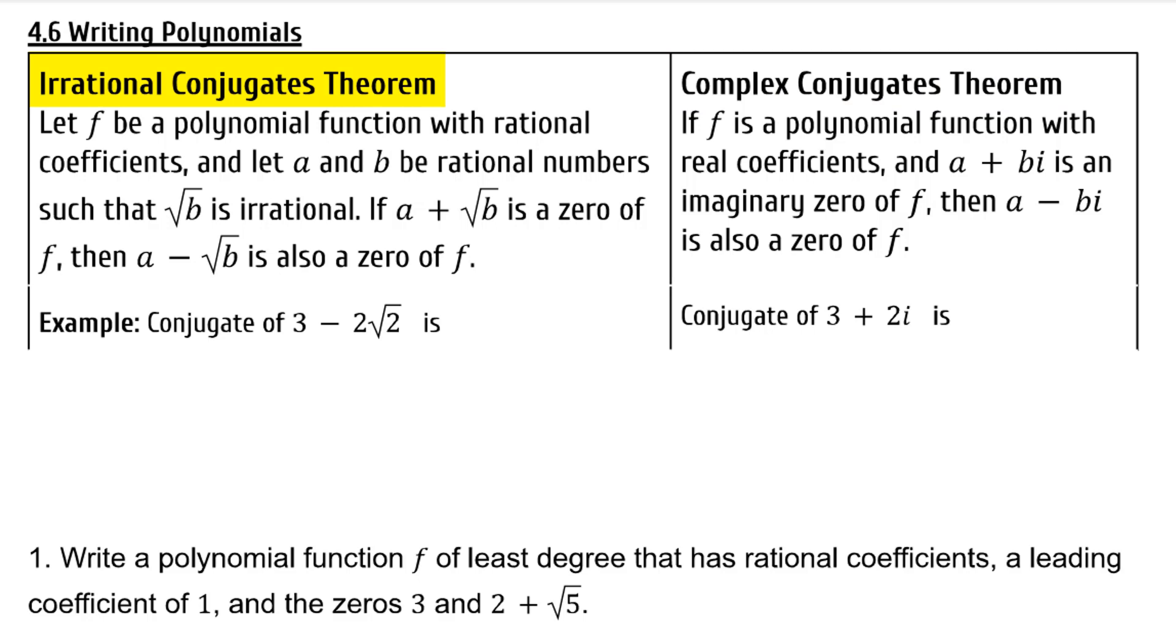Let f be a polynomial function with rational coefficients, and let a and b be rational numbers, such that root b is irrational. If a plus root b is a zero of f, then a minus root b is also a zero of f.